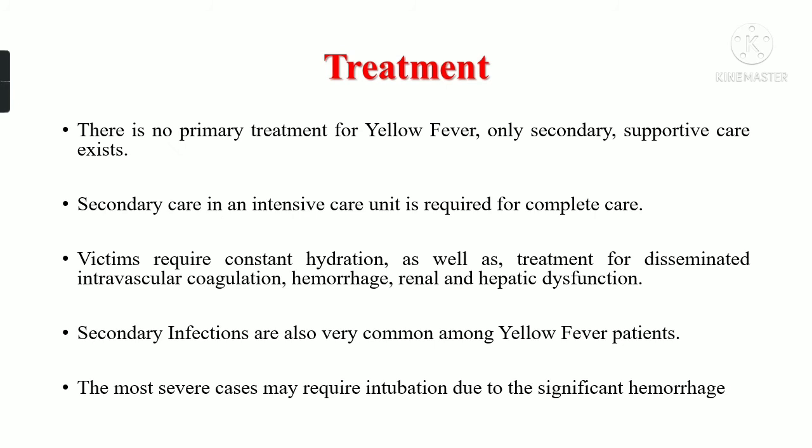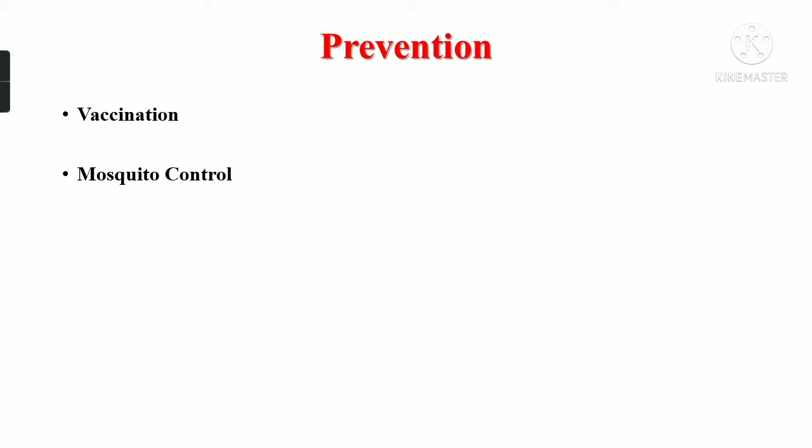There is no primary treatment for yellow fever; only secondary supportive care is available. Care in an intensive care unit (ICU) is required, with constant hydration and treatment for disseminated intravascular coagulation, hemorrhage, and renal and hepatic dysfunction. Secondary infections are also very common. The most severe cases may require intubation due to significant hemorrhage. For prevention, vaccination is available for people living in endemic areas. Another option is mosquito control using strategies such as mosquito repellents, larvicidal substances, and bed nets to prevent mosquito bites.